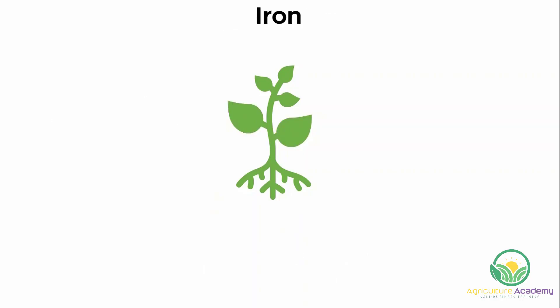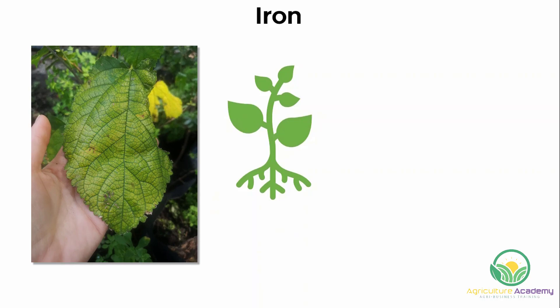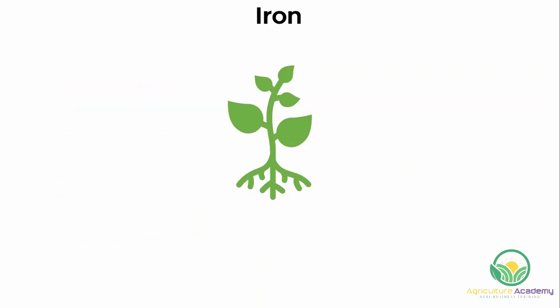Playing an important role in chlorophyll production, leaves will turn yellow if iron is deficient too. Deficiency symptoms are similar to those for magnesium, with interveinal chlorosis visible on the leaves. Unlike magnesium, however, the plant cannot translocate iron. Therefore, newer leaves will show signs of deficiency before the older ones.